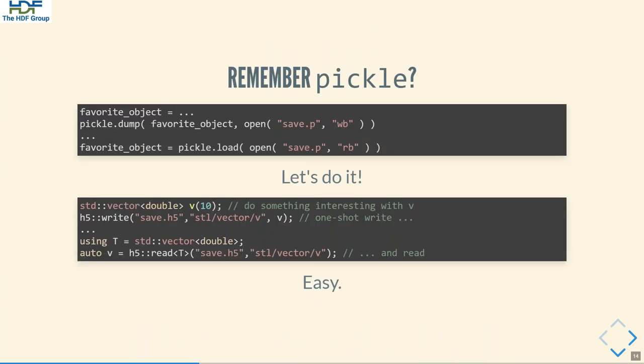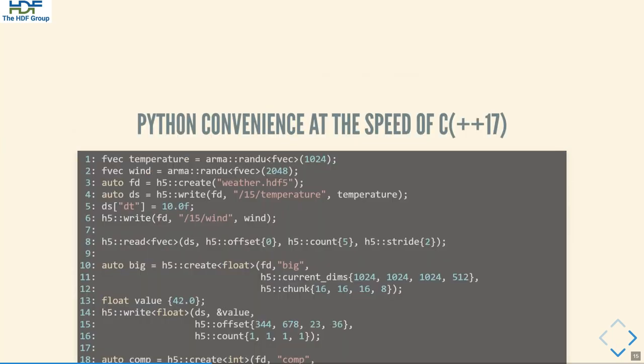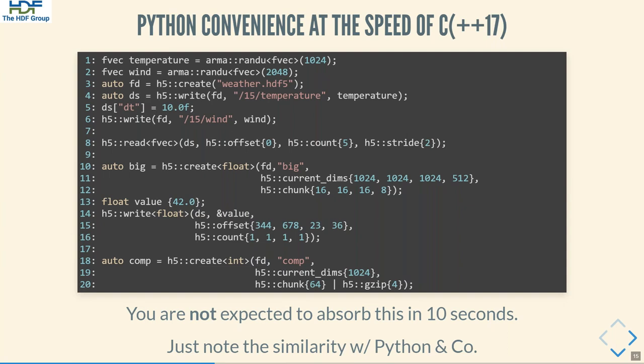Remember pickle in Python? With H5CPP, persisting C++ objects can really be as simple as persisting Python objects with pickle. The key difference is that these objects go straight to an HDF5 file where they can then be picked up by the same application, or R, or Python, or Julia, etc. Here is the weather station example with H5CPP, and whatever HDF5 API there might be, it really blends into the language so that it practically disappears.